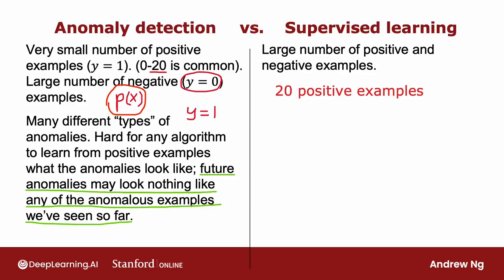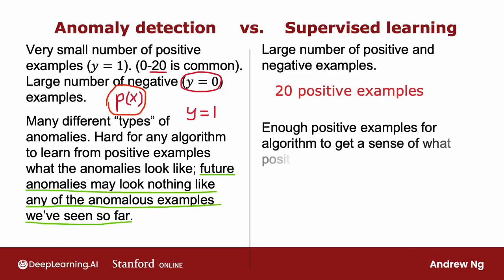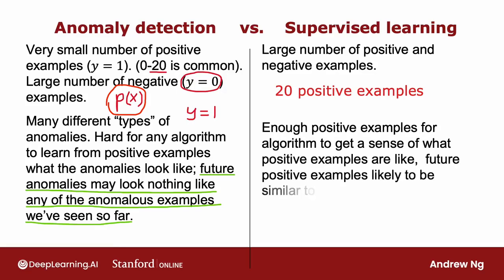In contrast, supervised learning has a different way of looking at the problem. When you're applying supervised learning, ideally you would hope to have enough positive examples for the algorithm to get a sense of what the positive examples are like. With supervised learning, we tend to assume that future positive examples are likely to be similar to the ones in the training set.